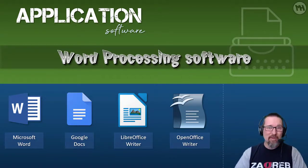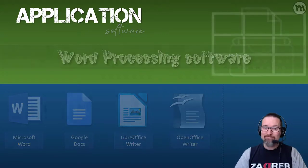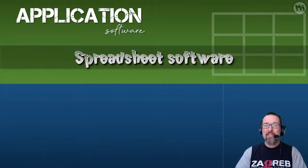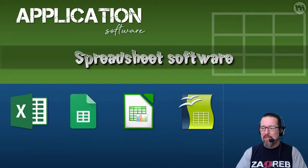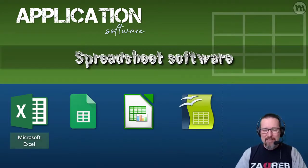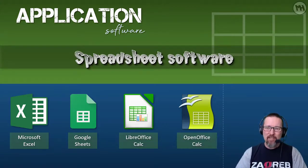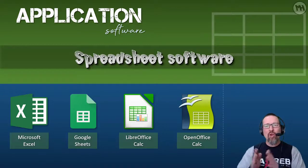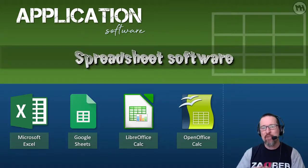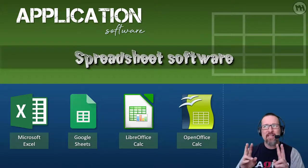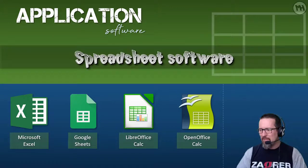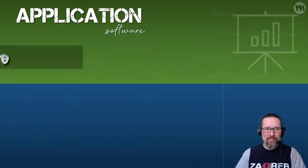Then we have spreadsheet software. We already know Microsoft Excel and Google Sheets — those two are very similar. Then of course Libre Office has one called Calc, and OpenOffice is also called Calc. The reason is these two are open source, so they're both very similar because they're based on the same code — they just have different flavors, so to speak.